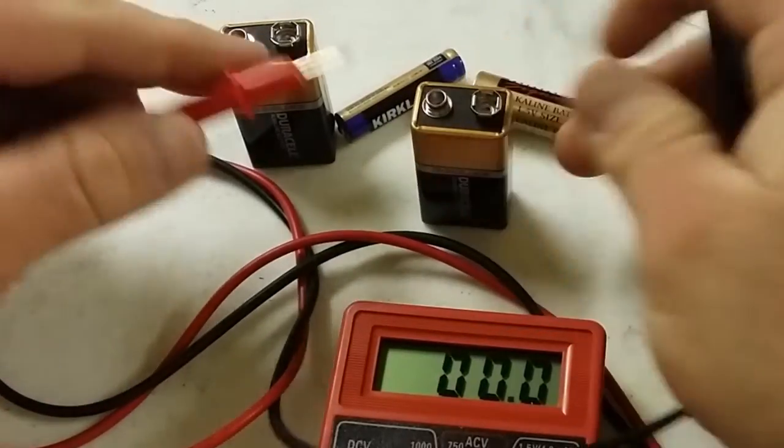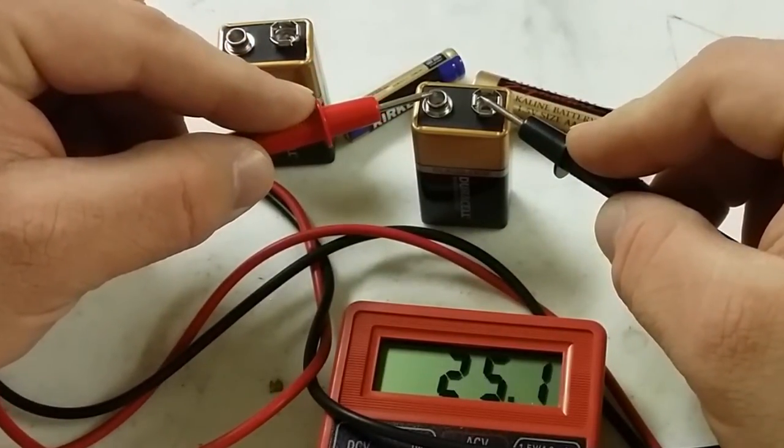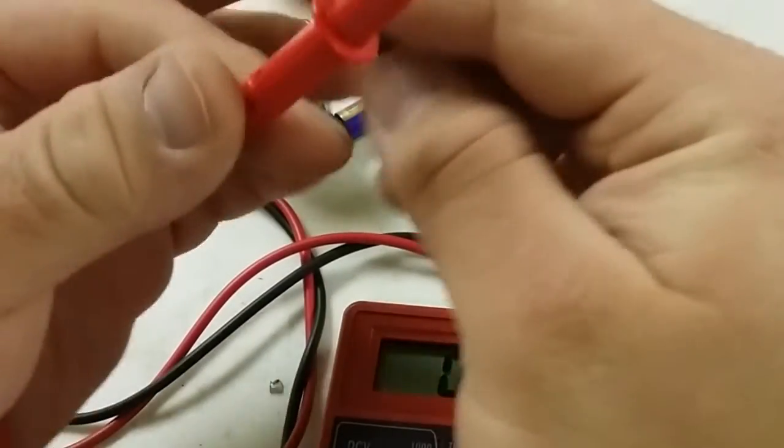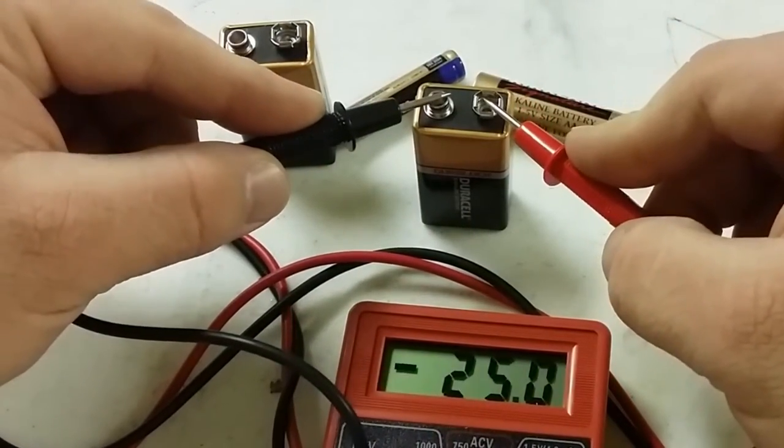If we take the other 9 volt battery, we can see that it is a full battery. If you were to reverse the leads when testing a battery, all it does is show a negative number on the multimeter.